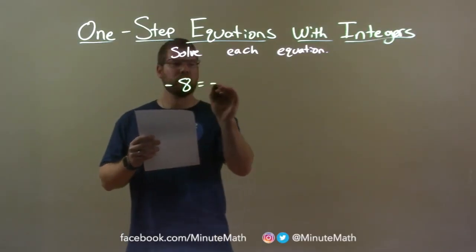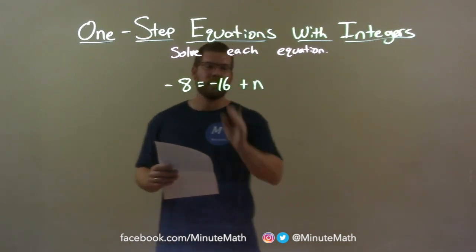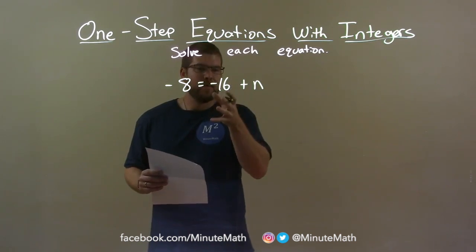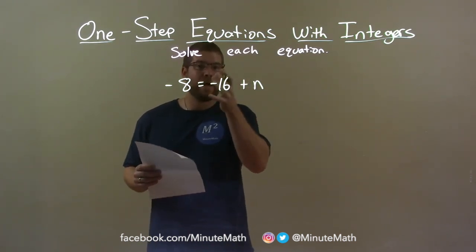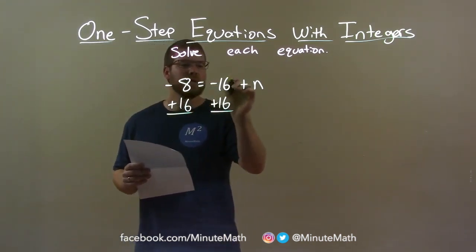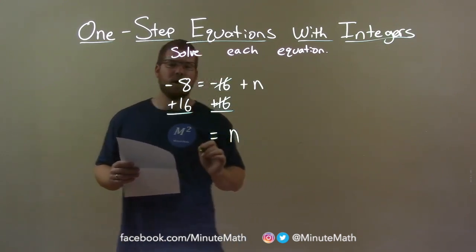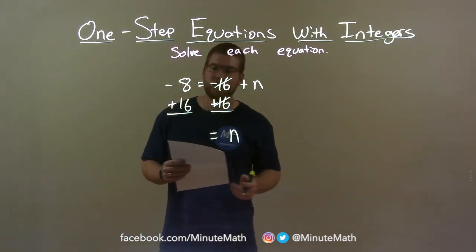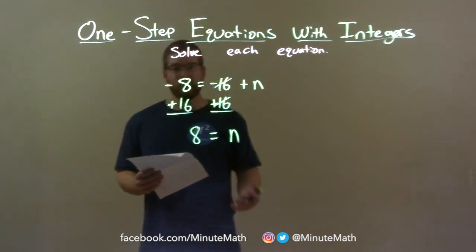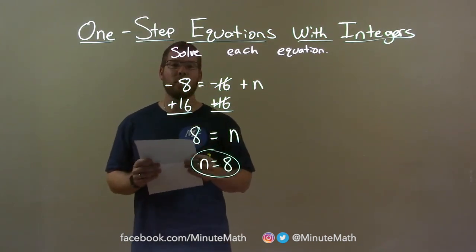Negative 8 equals negative 16 plus n. I want to get n by itself. We have negative 16 on the right. Opposite of adding a negative is adding a positive 16. So if I add positive 16 to both sides, that eliminates the negative 16 on the right. I have n by itself. Negative 8 plus 16 on the left comes out to positive 8. So 8 equals n — we can write n first: n equals 8. There we have our final answer.